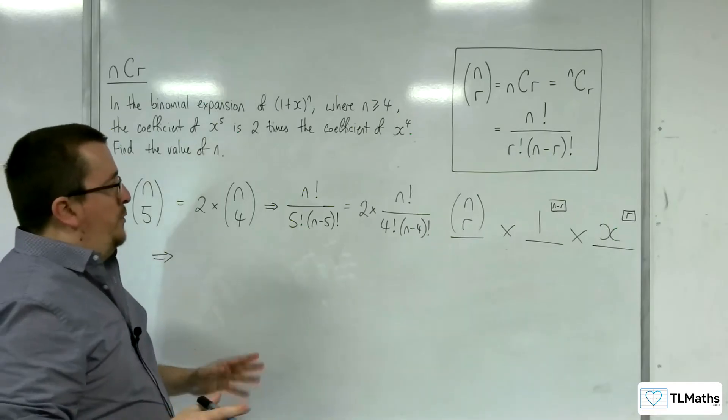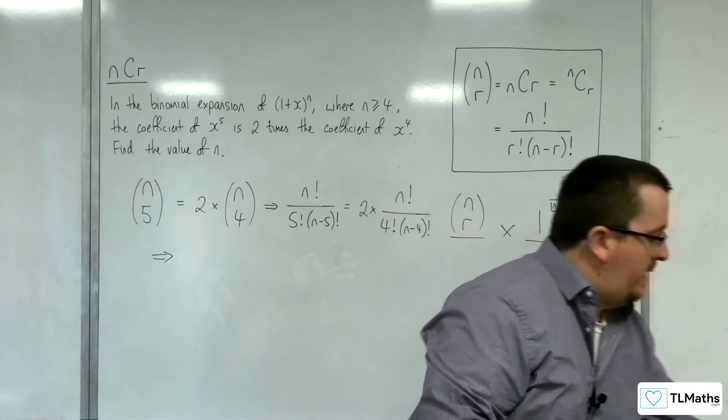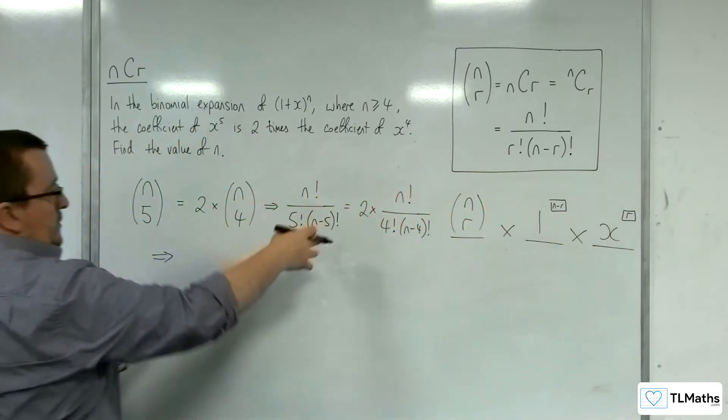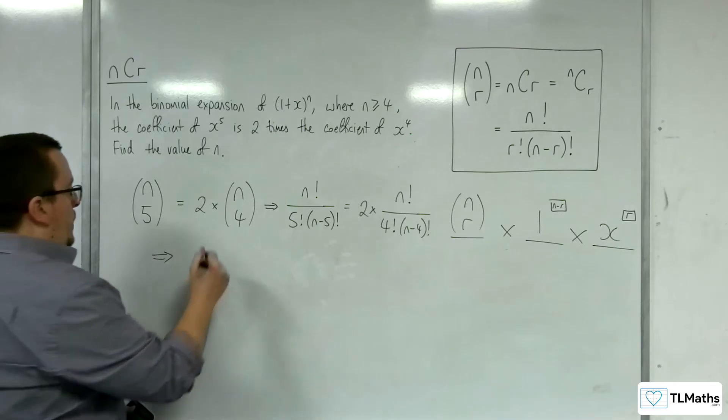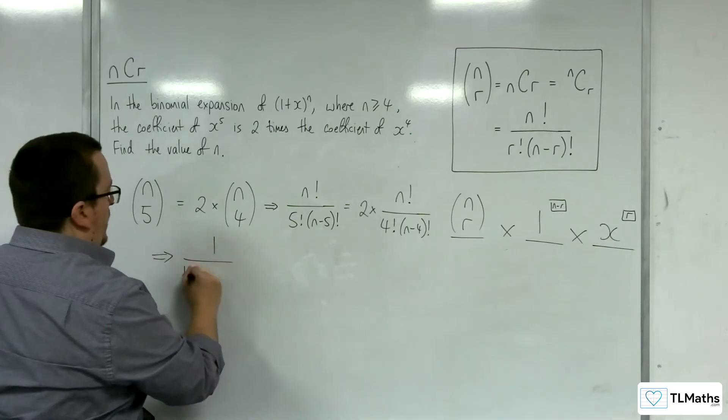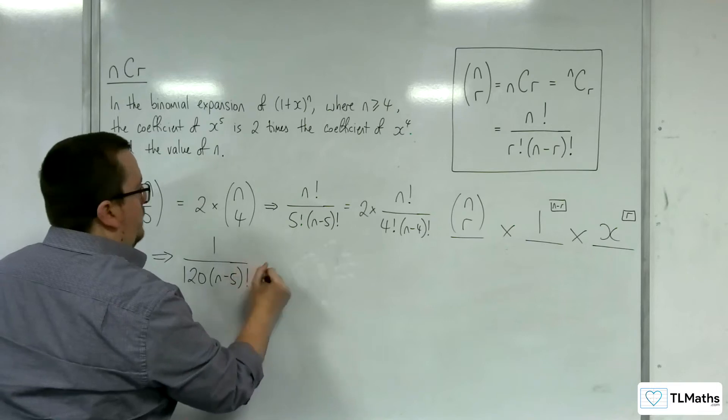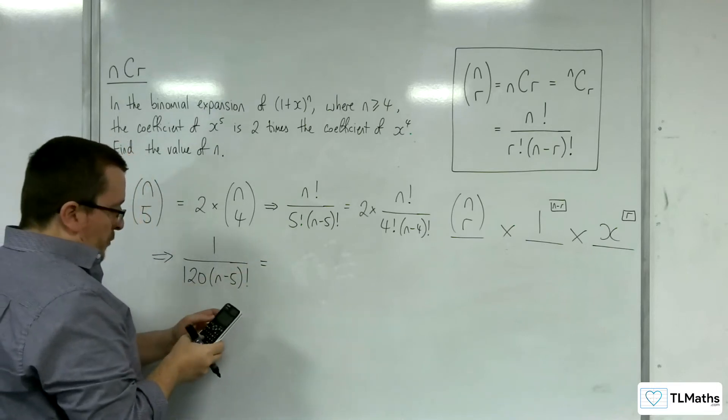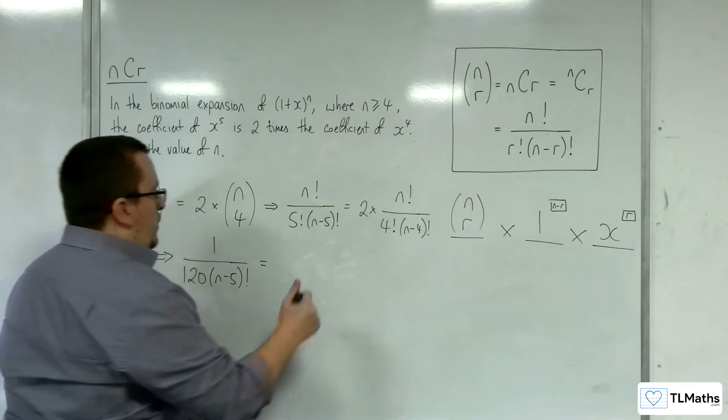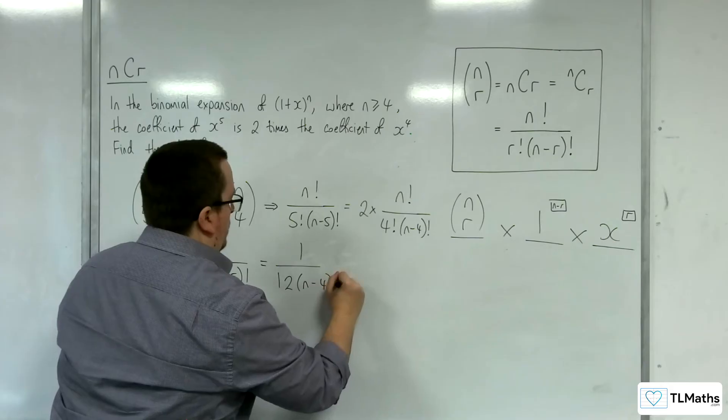So what I'm going to first of all do is divide both sides by n factorial, and I'm going to simplify the 5 factorial and the 2 over 4 factorial. So 5 factorial is 120. So we've got 1 over 120, n take away 5 factorial, is equal to, then we've got 2 divided by 4 factorial, is 1 over 12, so 1 over 12, n take away 4 factorial.